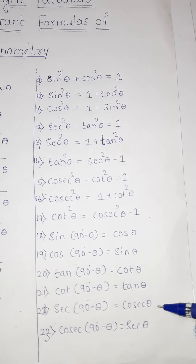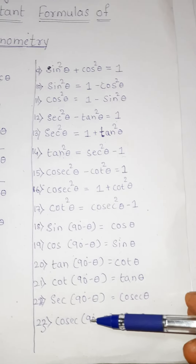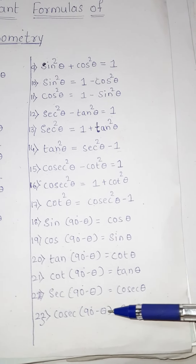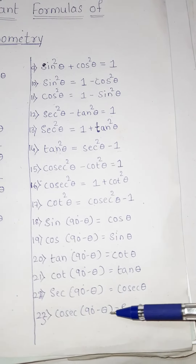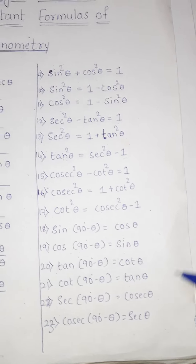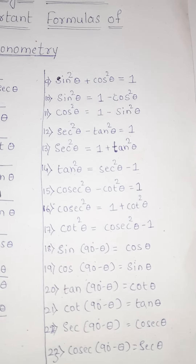Twenty-second: sec(90 degree minus theta) is equal to cosec theta. Twenty-third: cosec(90 degree minus theta) is equal to sec theta.